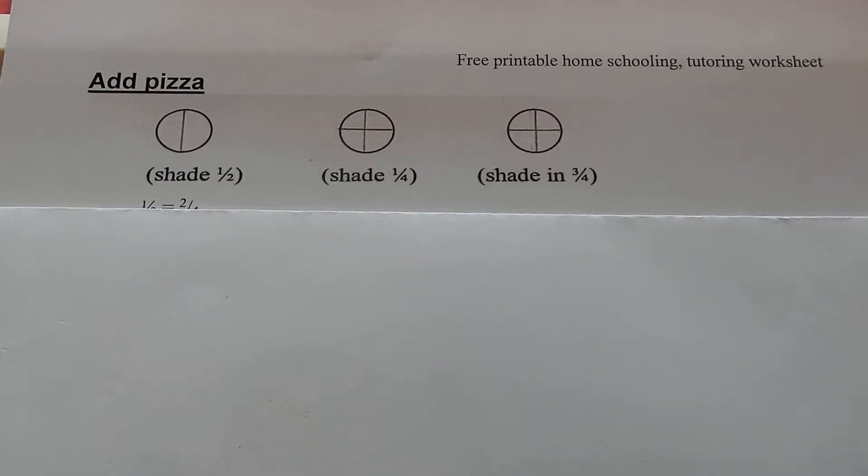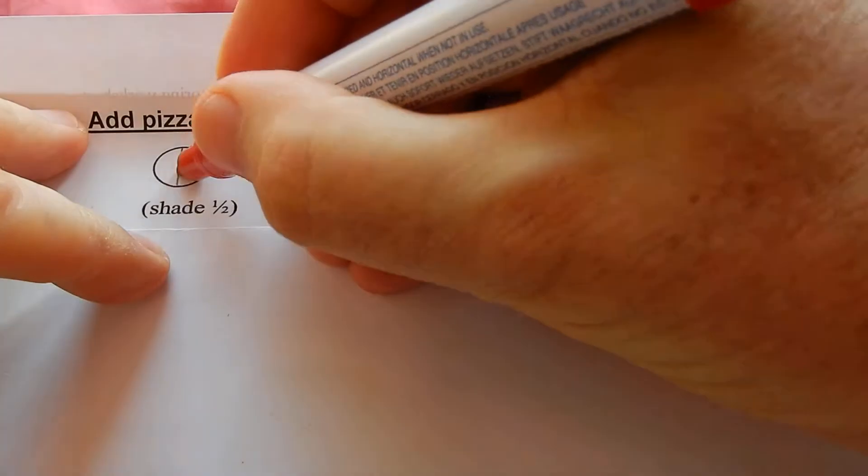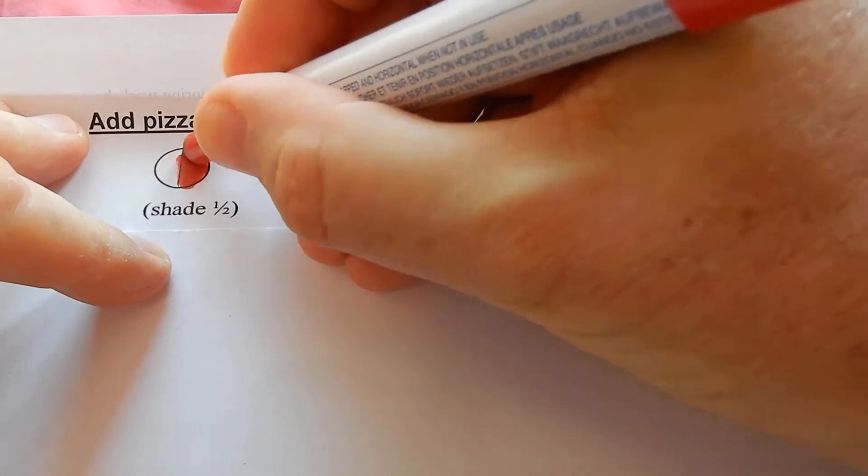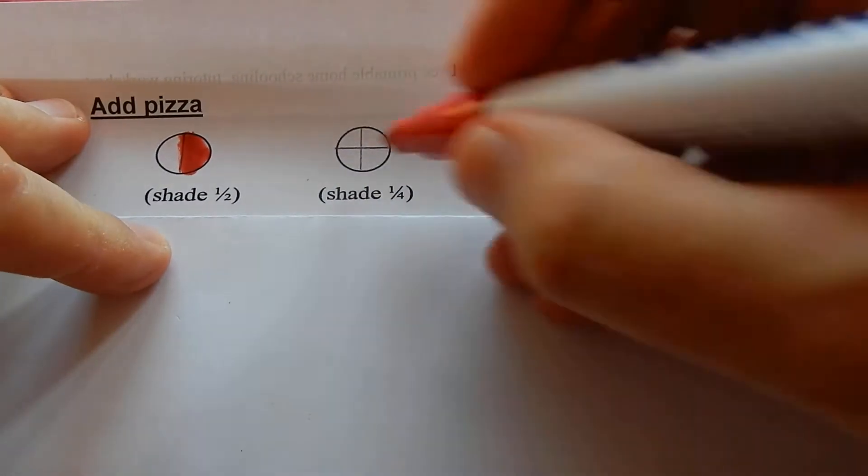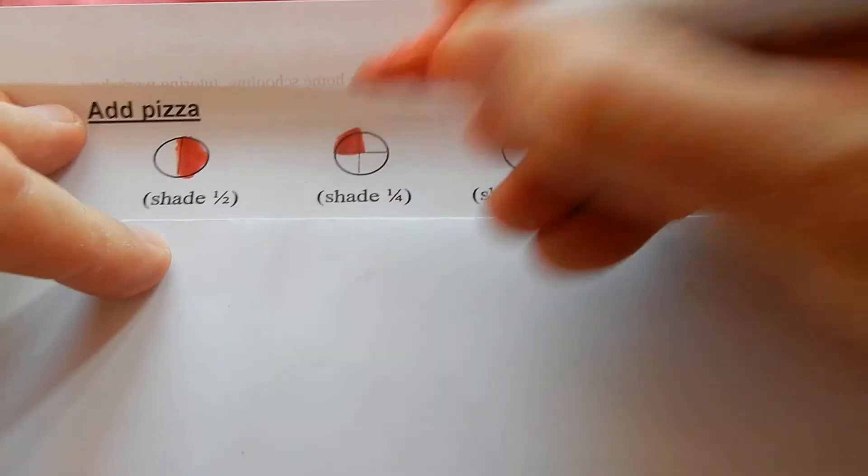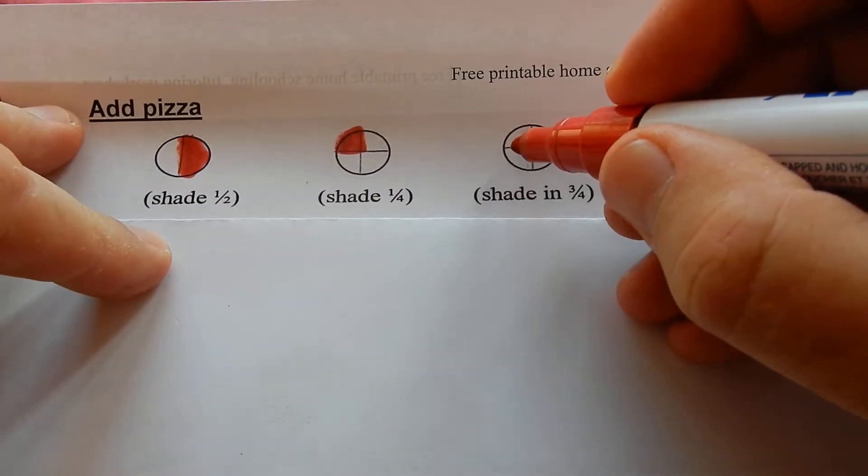Adding pizzas. Shade one half. Shade one half. Shade one quarter. Shade one quarter. Shade three quarters.